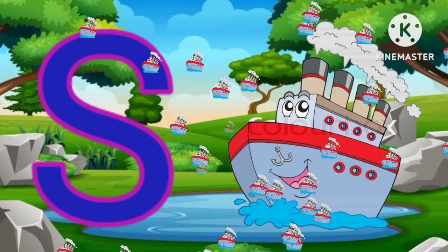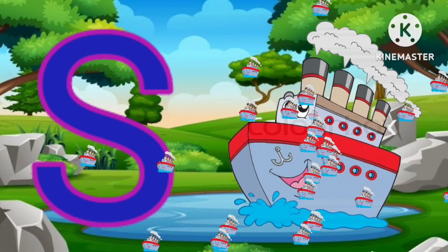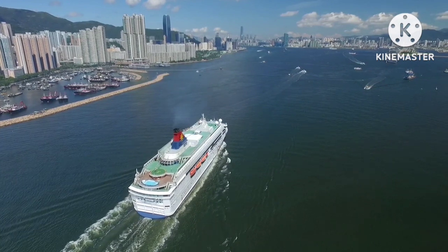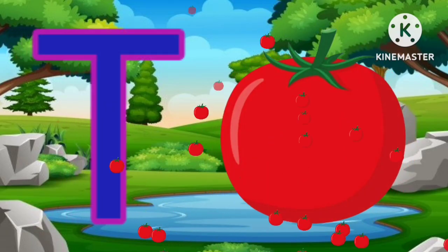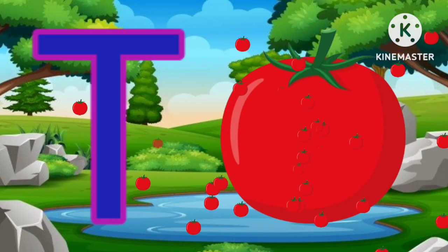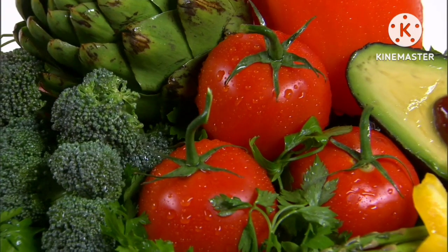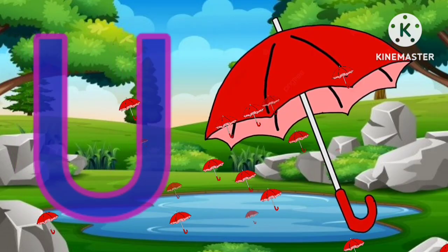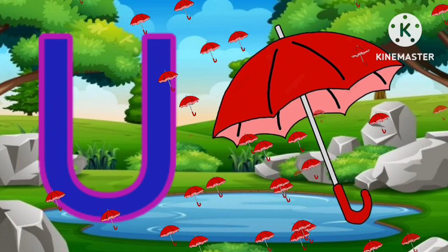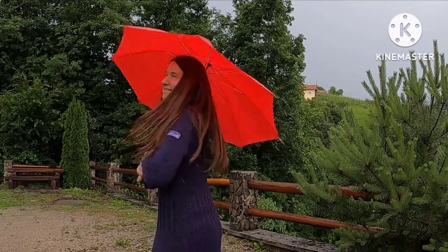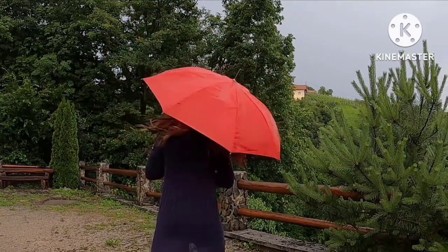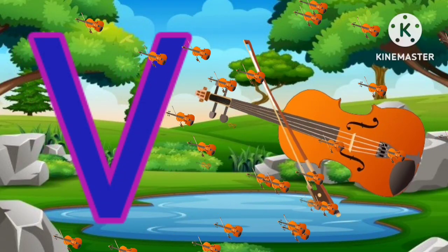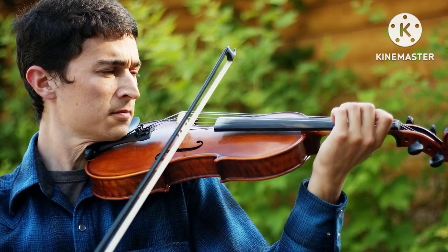R for rat. S for ship. T for tomato. U for umbrella. V for violin.